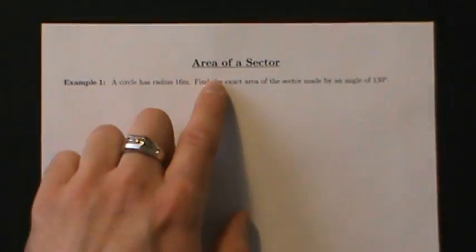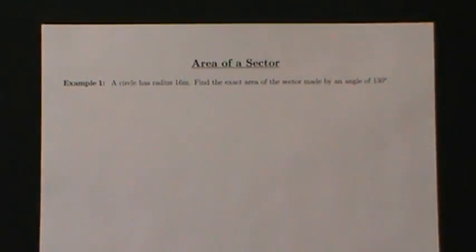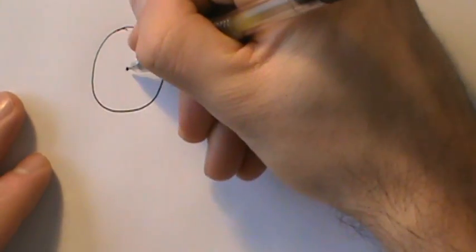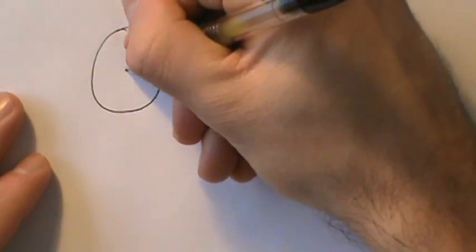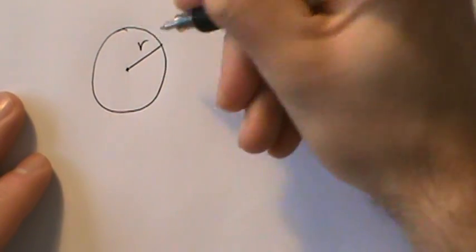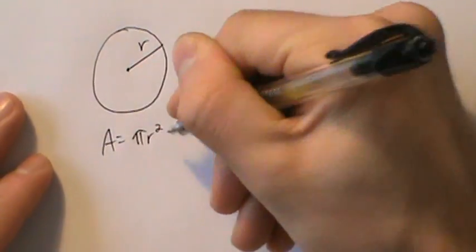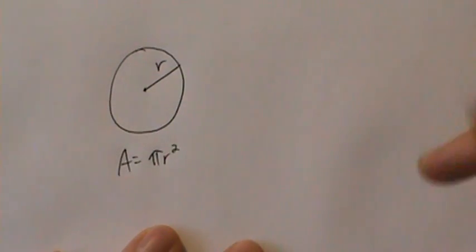Let's see what the formula is for the area of a sector of a circle and where it comes from. For a full circle with radius r, the area is pi r squared. That's for a full circle.